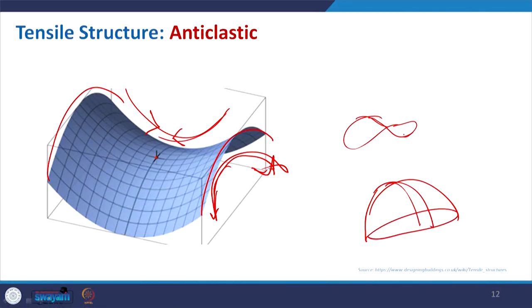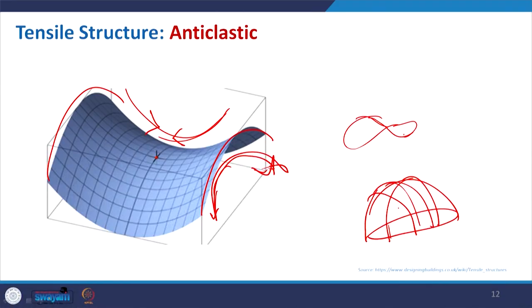The opposite of anticlastic is synclastic — where for a dome, all curvatures from x, y, z, whatever axis, in all directions give a similar kind of direction. In anticlastic it is in opposite direction, and this can be achieved through different kinds of parabolic, hyperbolic, or parabolic hyperboloid forms. If you see some of the work done by architect Felix Candela, you can get all these examples like the oceanographic building or similar buildings with this kind of anticlastic curvature where tensile stress is being used.